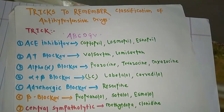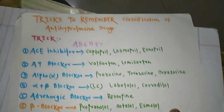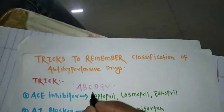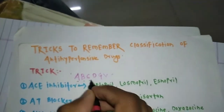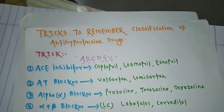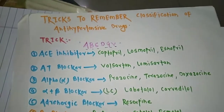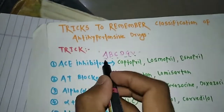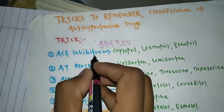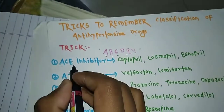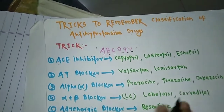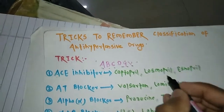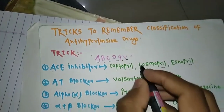The trick for anti-hypertensive drugs is: A, B, C, D, G, and V. The first A stands for ACE inhibitor — Angiotensin Converting Enzyme inhibitor. Under this category we include all the '-pril' drugs: captopril, enalapril, lisinopril, and ramipril.